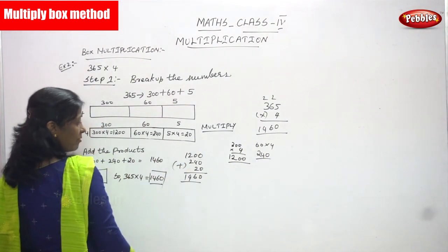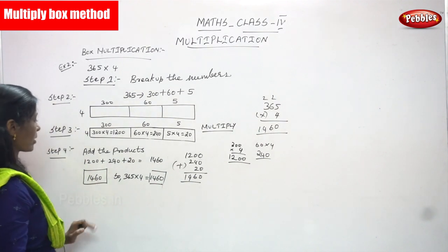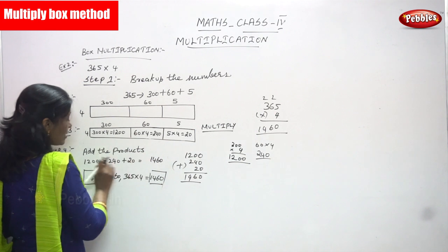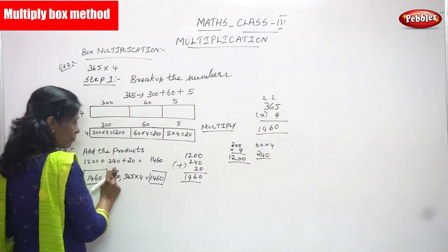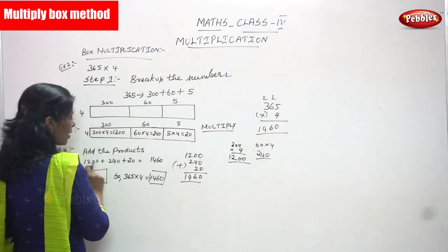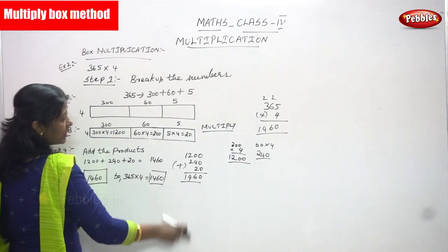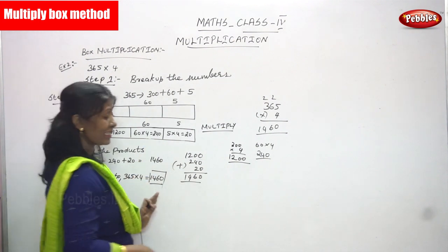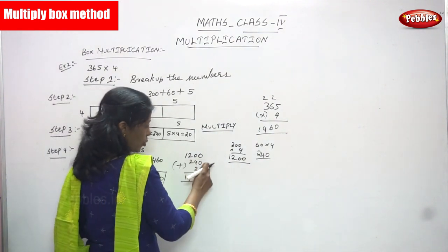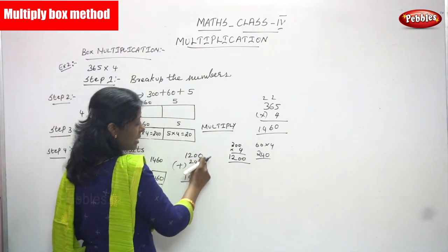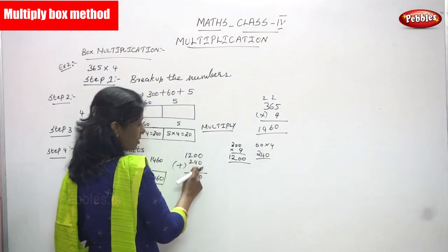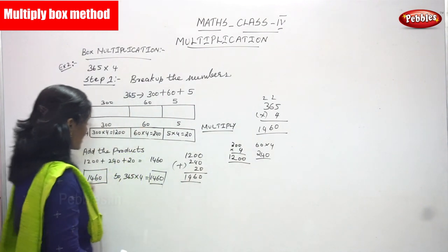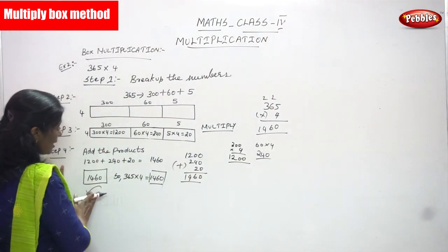Step four: add the products. The numbers in the boxes are 1200, 240, and 20. Add all the products: 1200 plus 240 plus 20. I've written it horizontally, then vertically — zero plus zero plus zero is zero, four plus two plus nothing is six, two plus two is four, and one — giving one thousand four hundred and sixty.